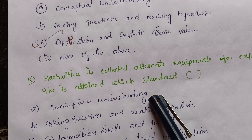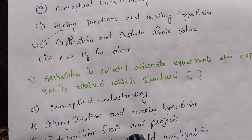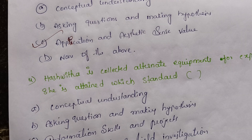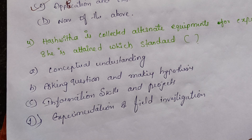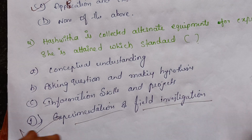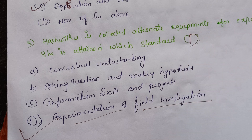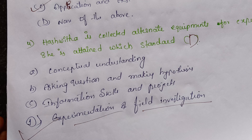The correct option is D — experimentation and field investigation. Collecting alternative experimental materials is a specification of the experimentation and field investigation academic standard. Thank you for watching, please subscribe to my channel and support me.